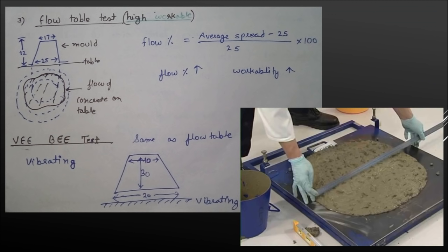Third test is the flow table test, used for very high workability cement. We take a mold and fill it up, then remove the mold. On the flow table, we give jolts and measure how much area is covered by the concrete. We calculate the average spread minus the mold diameter, divide by 25, and multiply by 100 to get flow percentage. An advanced form is the VB test, where we put the mold on a vibrating table and check the flow radius to determine VB value.